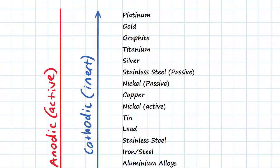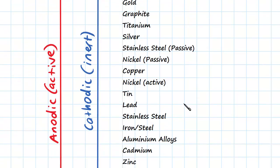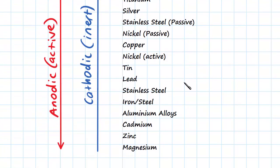If we look at the scale here, as we move upwards on the list, we're going to be approaching cathodic or inert elements. As we move down the list, we're going to be approaching anodic or active behavior.